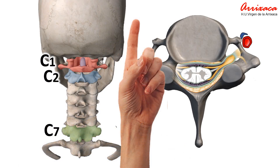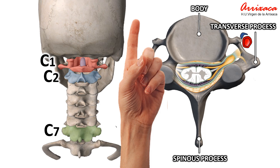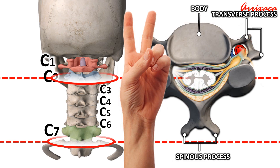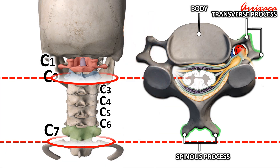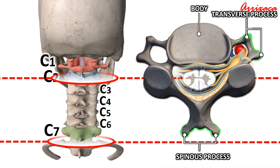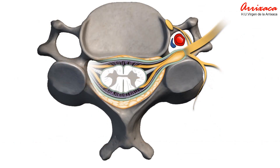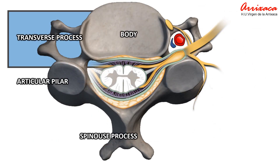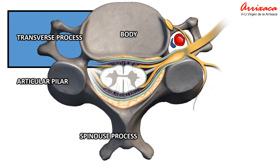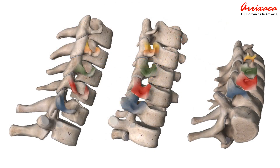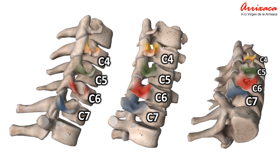C7 has a prominent spinous and transverse process formed by a single posterior tubercle. Cervical vertebrae C3 through C6 are known as typical vertebrae because they share the same basic shapes with most vertebrae throughout the rest of the spine, and their spinous and transverse processes are formed by two tubercles. To perform explorations of the cervical roots, we will focus on the examination of these transverse processes, as understanding their shape plays a vital role in guiding us toward the various nerve roots.